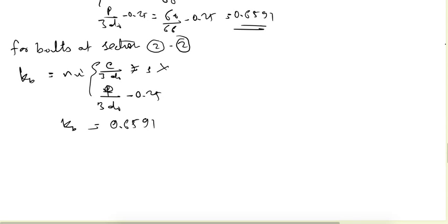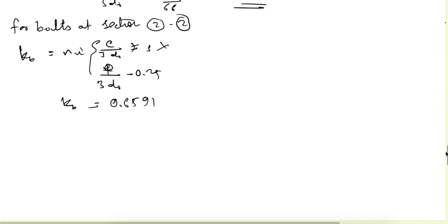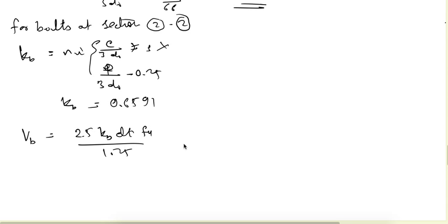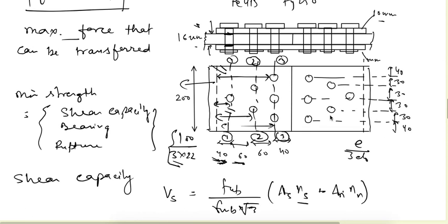We have obtained KB. Now we can find out the bearing capacity of the bolts. The bearing capacity VB is different for section 1-1 where only one bolt is present, and different for the remaining five bolts.